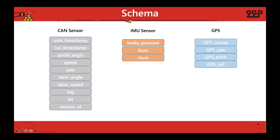I'm going to do a basic breakdown of the schema. From three sensors we're tracking data into a data table in parquet format — this is the current dataset. We have things like Unix timestamp, speed, yaw, steering angle, longitude, and latitude, and the session ID from the CAN sensor. From the IMU sensor we're looking at brake pressure, left turn, and right turn. From GPS we have GPS course, GPS yaw, GPS pitch, and GPS roll.